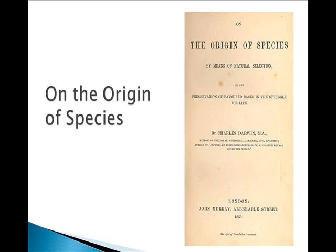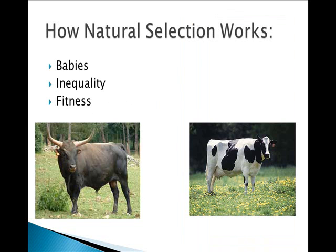Darwin wrote On the Origin of Species to solidify his ideas of descent of a species over time and published it in 1859. In it, he came up with three principles. He used the ideas of artificial selection, in which a farmer selects positive traits in livestock, and applied those ideas to how nature works on selecting traits in a species. Populations make more offspring than can be supported by the environment. Individuals have an unequal ability to survive and reproduce, and the competition for limited resources such as mates, food, shelter, and water will allow some organisms to survive and reproduce and others not. This ability is referred to as an individual's fitness.